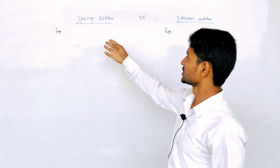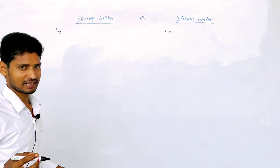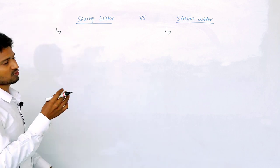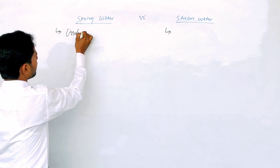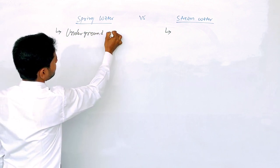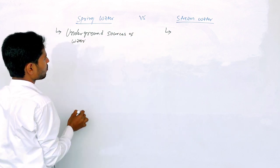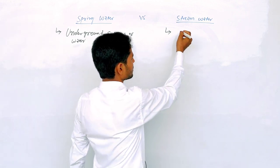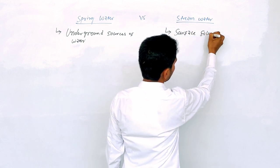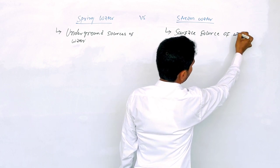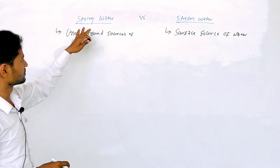In this class, I am going to discuss about spring water and stream water. Everyone is very confused about the difference. Spring water is from underground sources of water, while stream water is from surface sources of water.